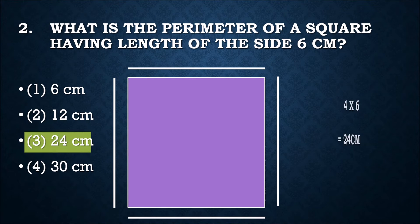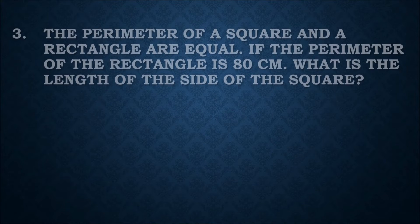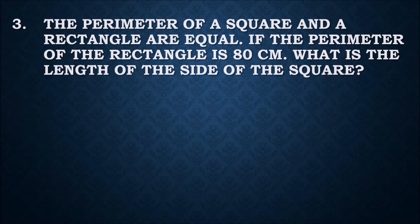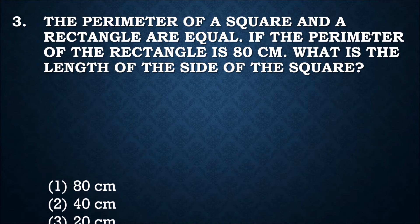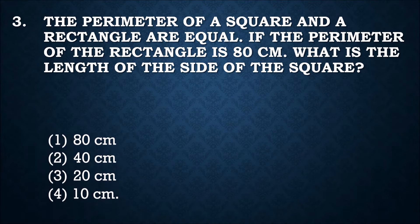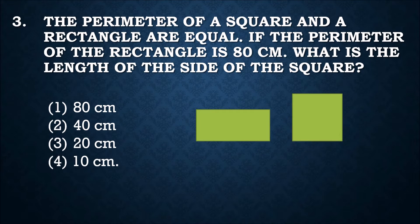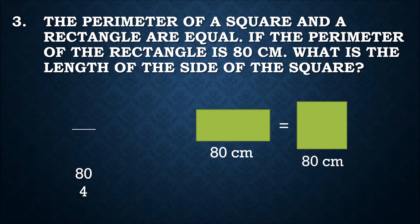Question number three: the perimeter of a square and a rectangle are equal. If the perimeter of the rectangle is 80 centimeter, what is the length of the side of the square? Options: 80 centimeter, 40 centimeter, 20 centimeter, or 10 centimeter. Since the perimeter of the square equals 80 centimeter, we divide 80 by 4 to get 20. Third option, 20 centimeter, is the correct answer.